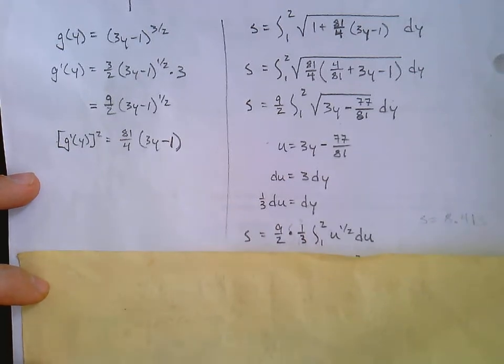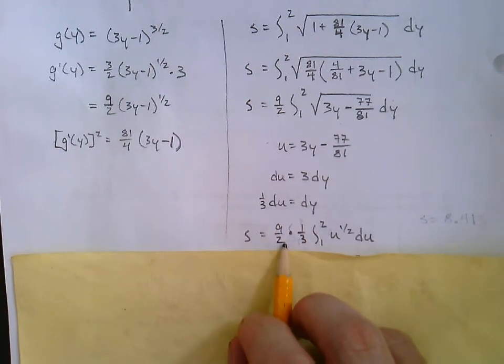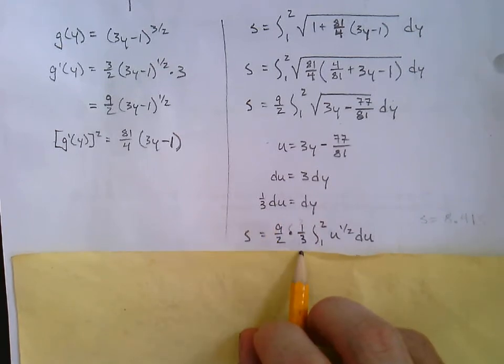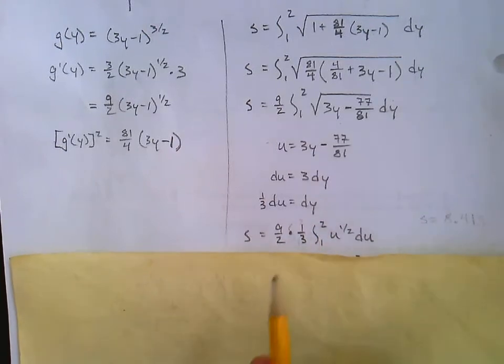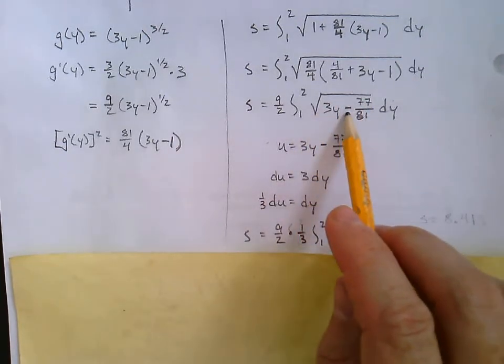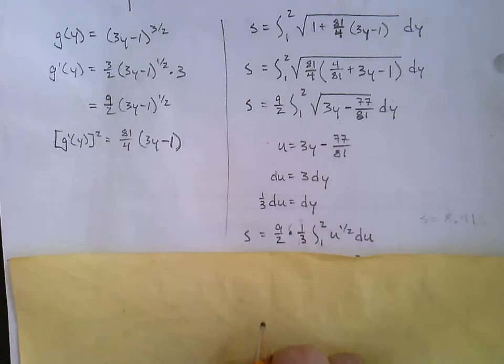And so now, plugging in our u's, s equals 9 over 2. I'll just bring that 1 third all the way out in front. Integral from 1 to 2, it's going to be the square root of u. I'll just think of that as u to the 1 half and the du.